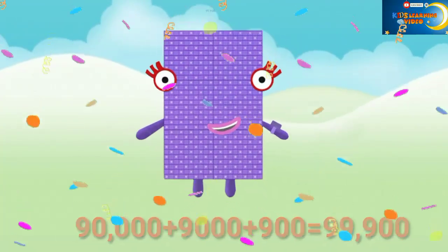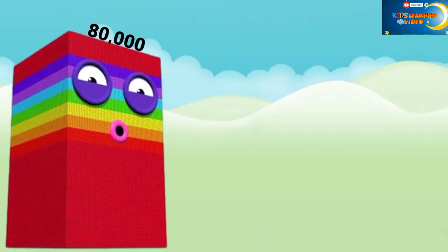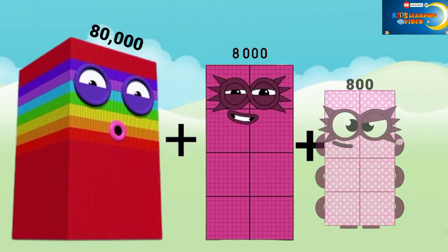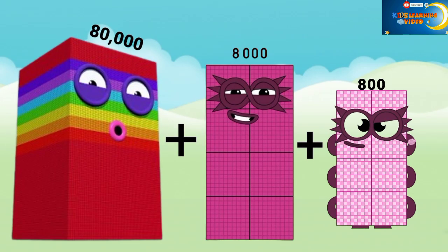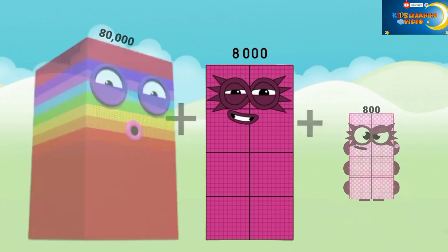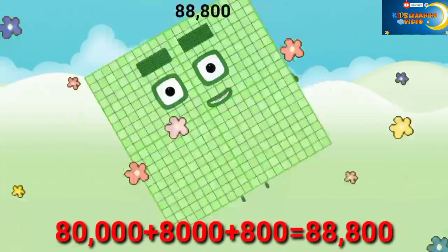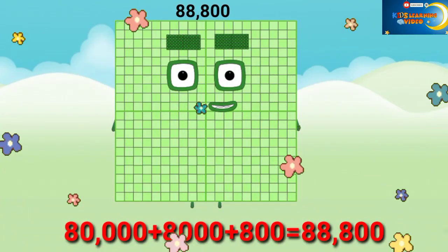80,000 plus 8,000 plus 100 equals 88,800.